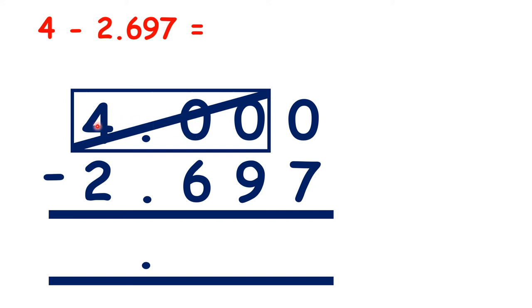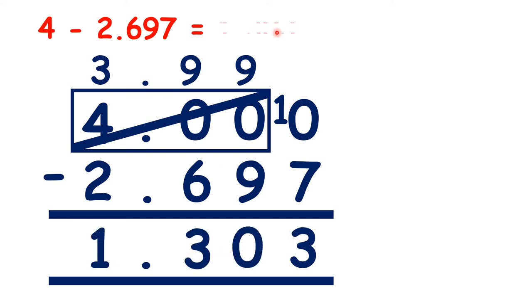So here we're boxing off 4.00, so that becomes 3.99, and that gives us ten thousandths, so we can subtract as normal to get 1.303.